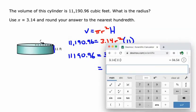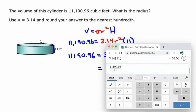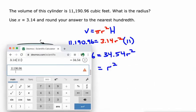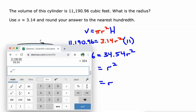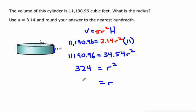So 11,190.96 divided by 34.54. That's 324. And then we'll take the square root of both sides to get r by itself. So let's go square root of my previous answer. And that is 18. The square root of 324 is 18. So 18 feet is the radius.